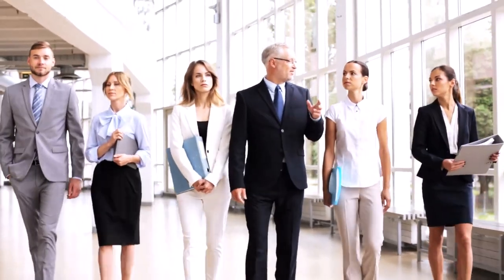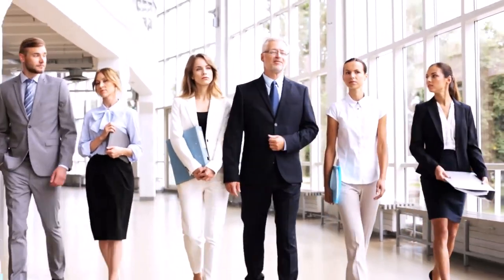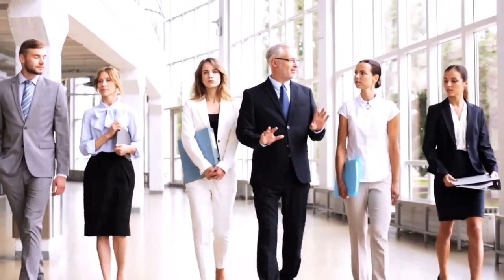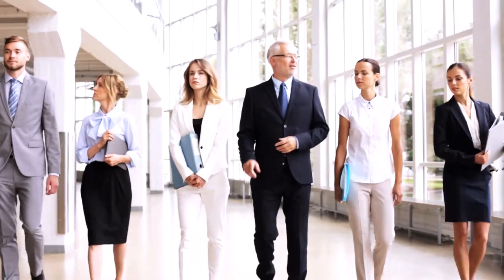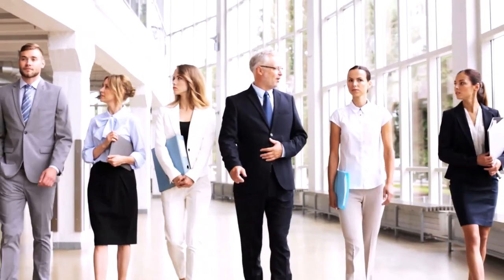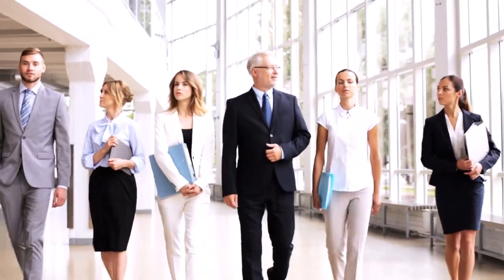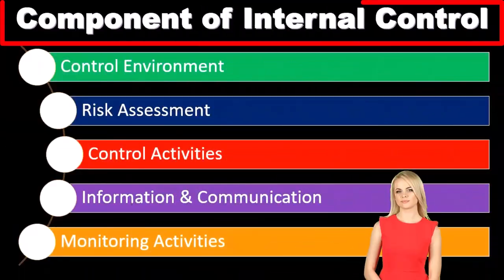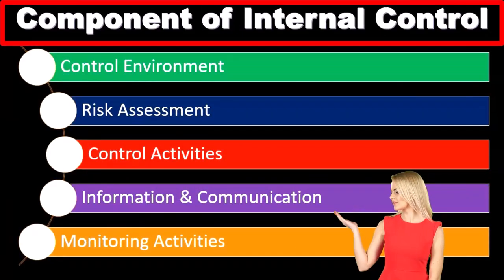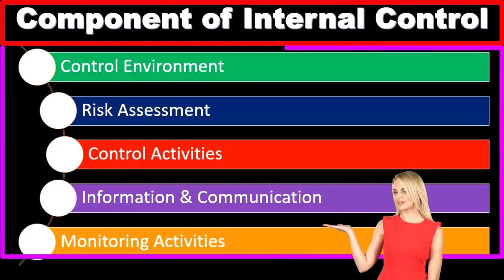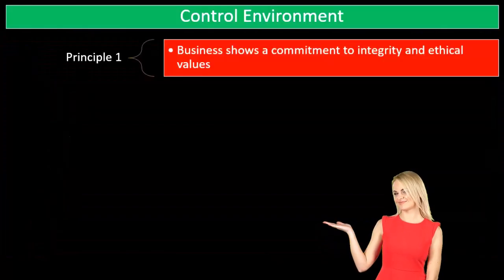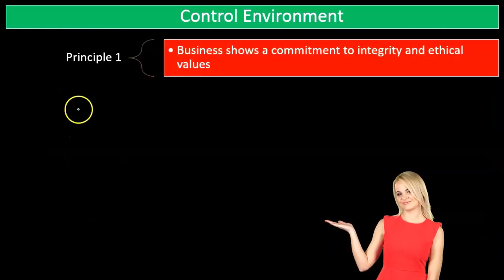We're going to list out our five components of internal controls and then list out principles related to them. Those five components are: the control environment, risk assessment, control activities, information and communication, and monitoring activities.